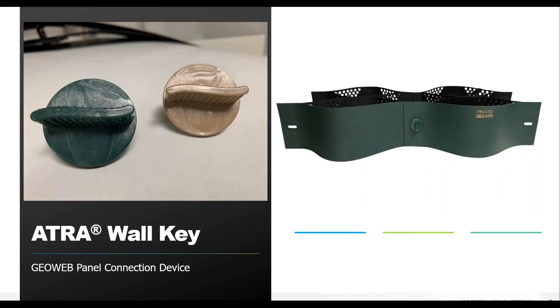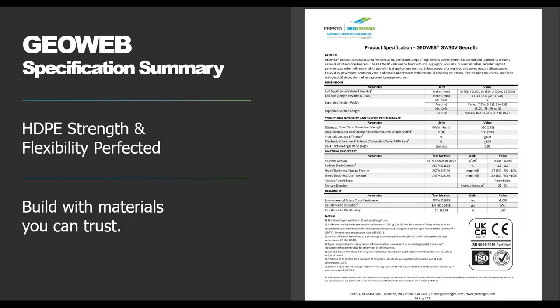The Atra Wall Key is the main component of a completely integrated system, connecting each individual panel of geob into a single system. The wall key allows for faster installation and a longer lifetime for the project, ensuring the wall is protected and the geob system will not fail under anticipated loads. The specific engineered values of the Atra Wall Key ensure the system holds up to loading over time without the corrosion seen in staples or the failure of underperforming zip tie systems. For geob to perform uniformly, it is critical that both the factory-welded internal seams and the field joint junctions — the Atra Wall Key — perform at the same level as the cell walls.